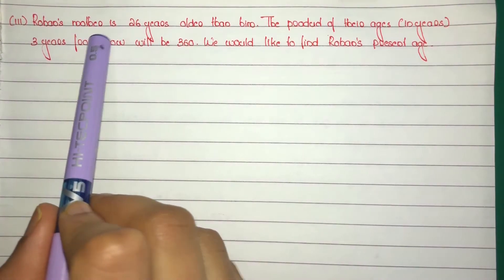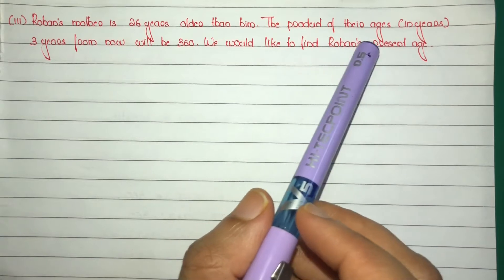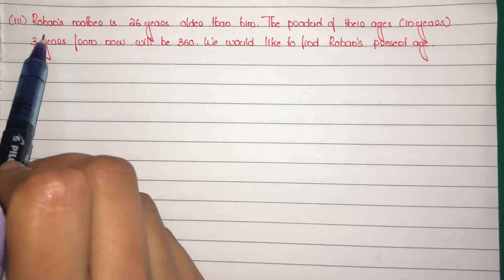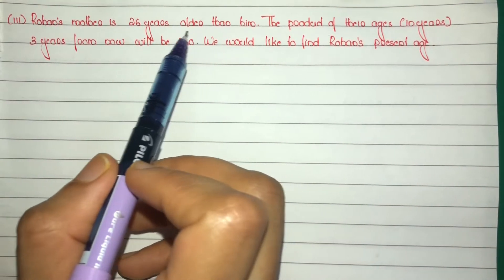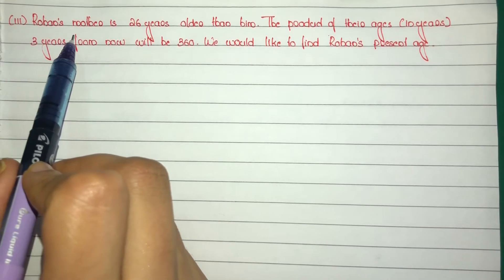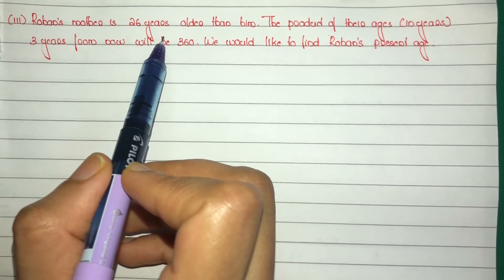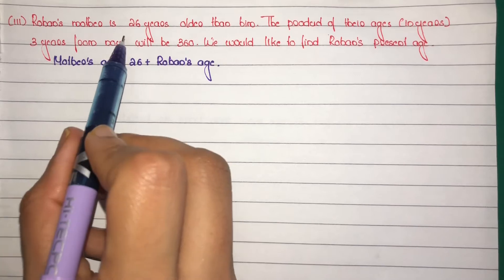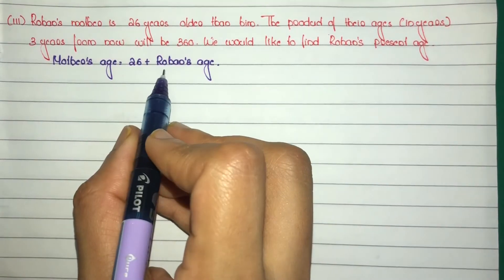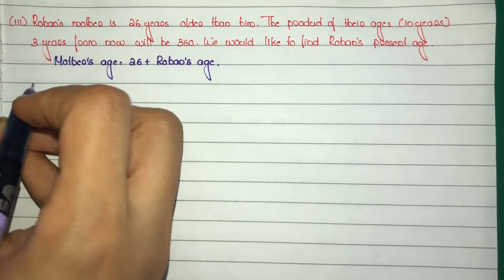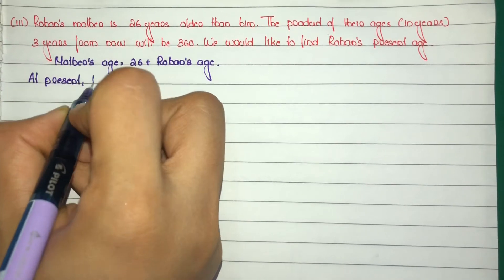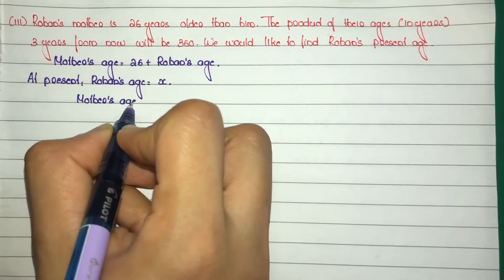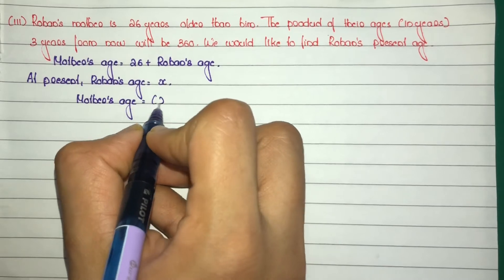Question number 3: Rohan's mother is 26 years older than him. The product of their ages in years three years from now will be 360. We would like to find Rohan's present age. At present, Rohan's mother's age is equal to 26 years plus Rohan's age, that is 26 plus x.